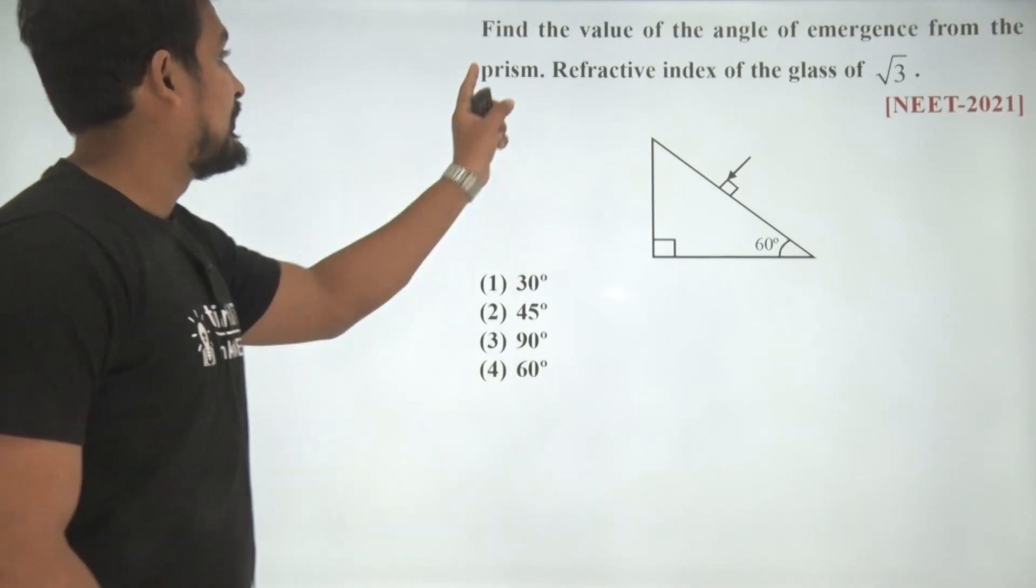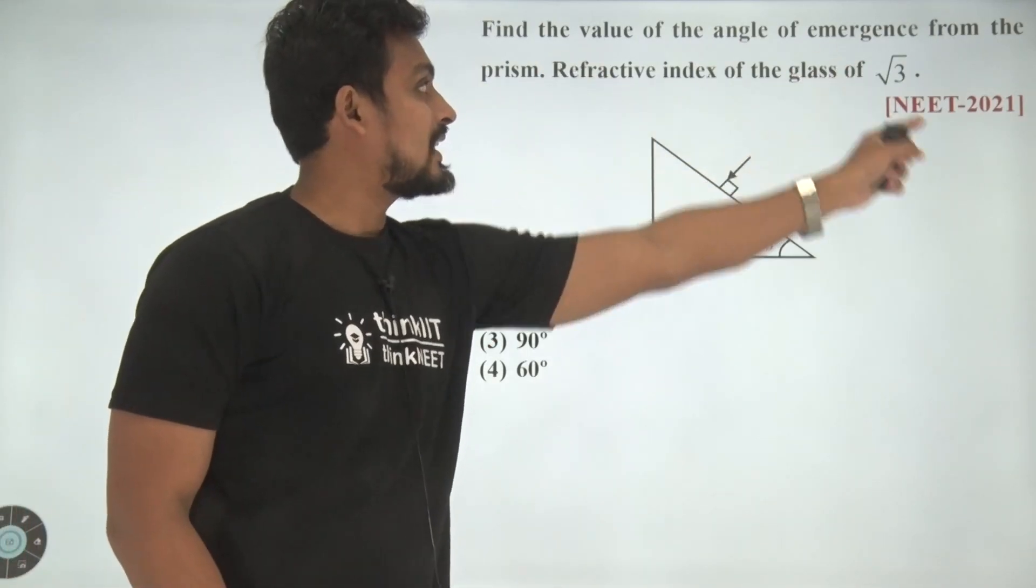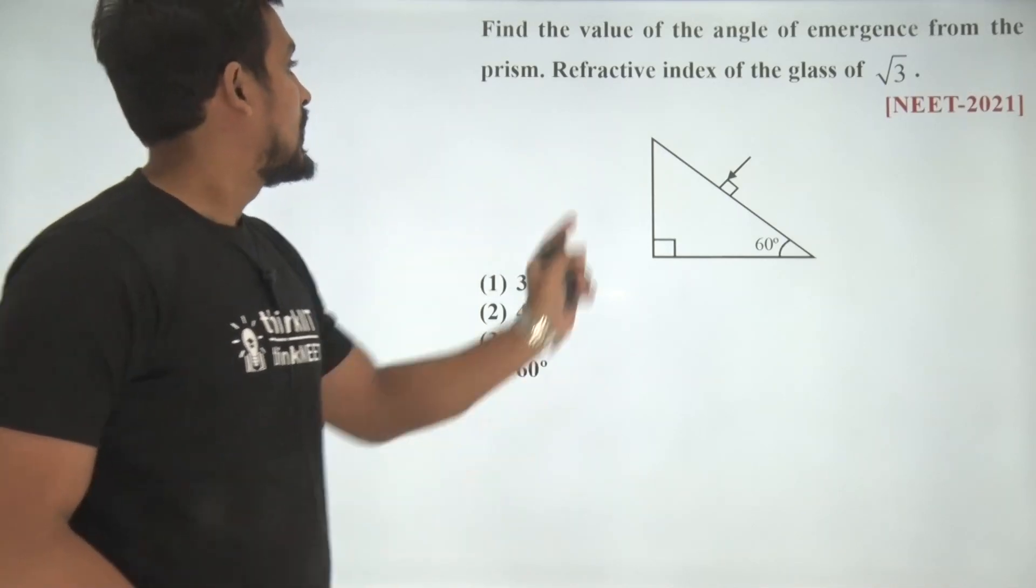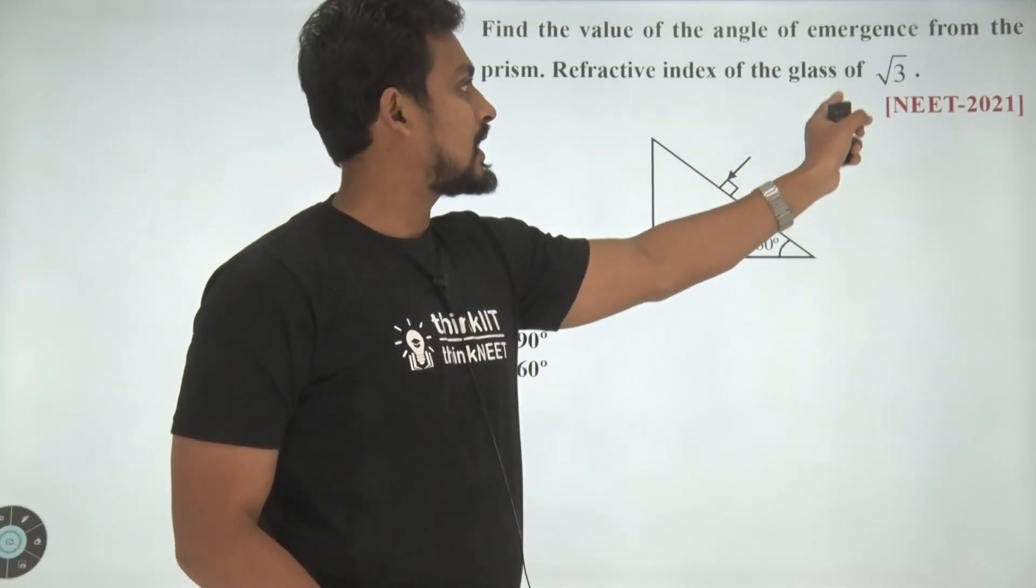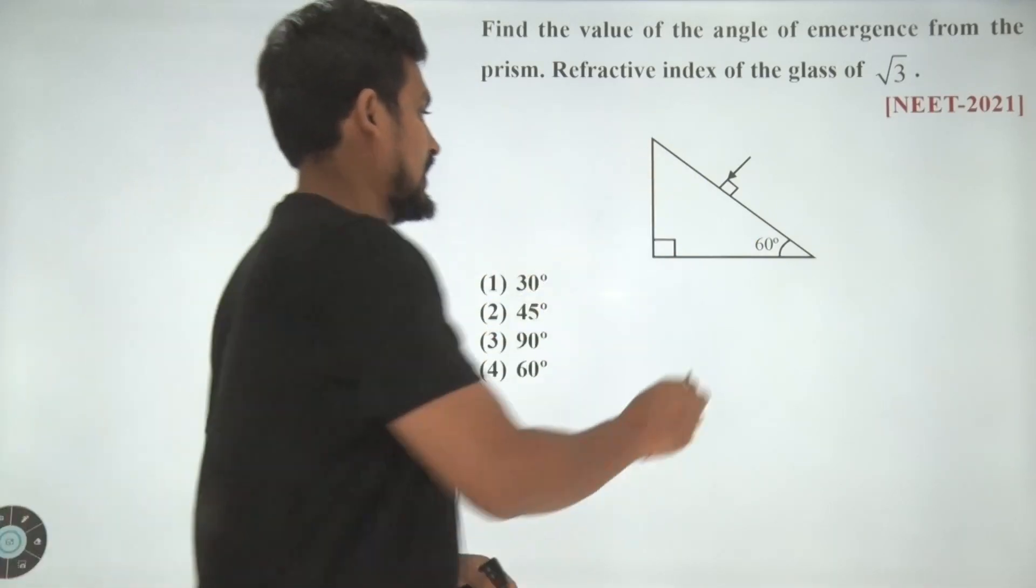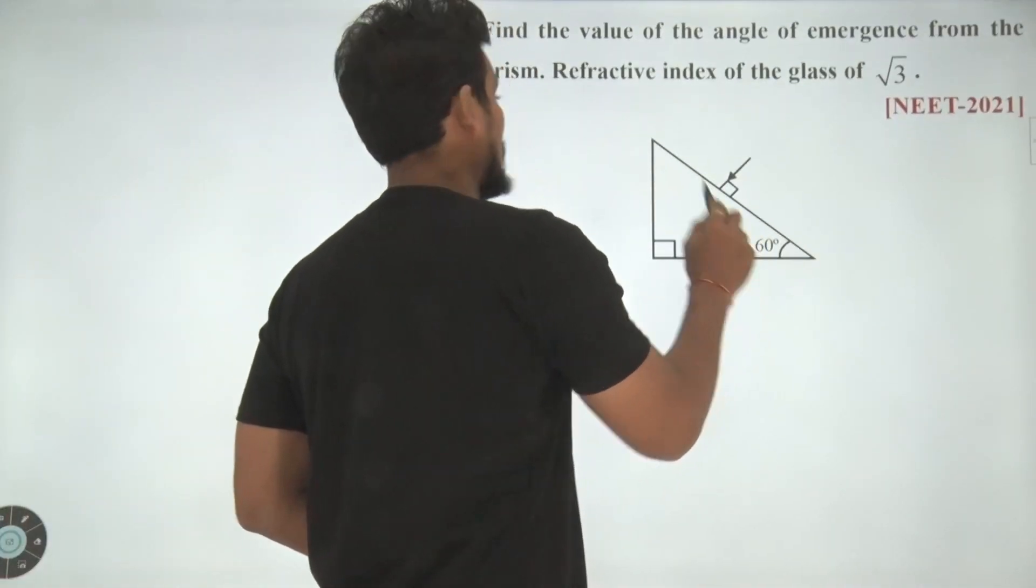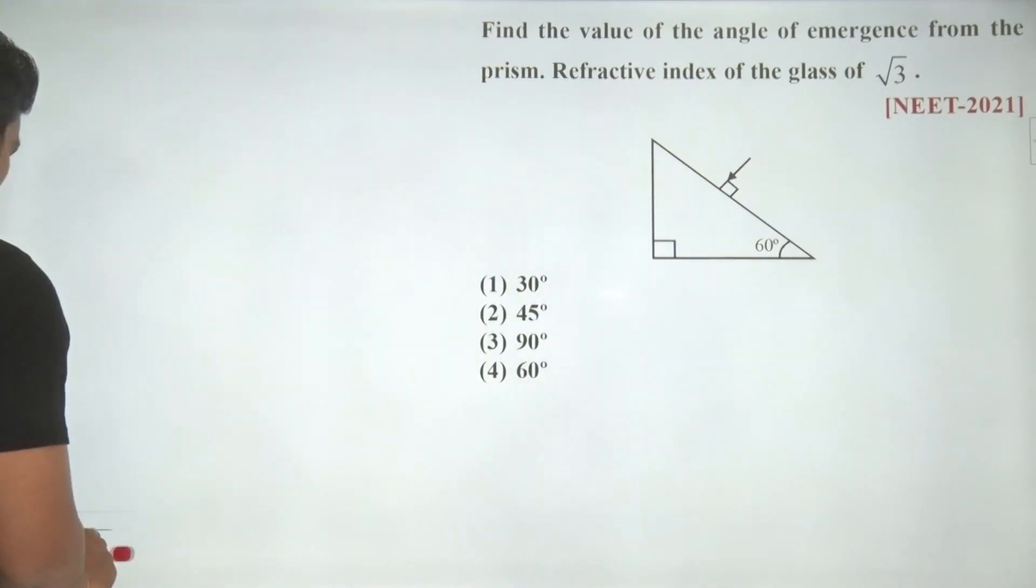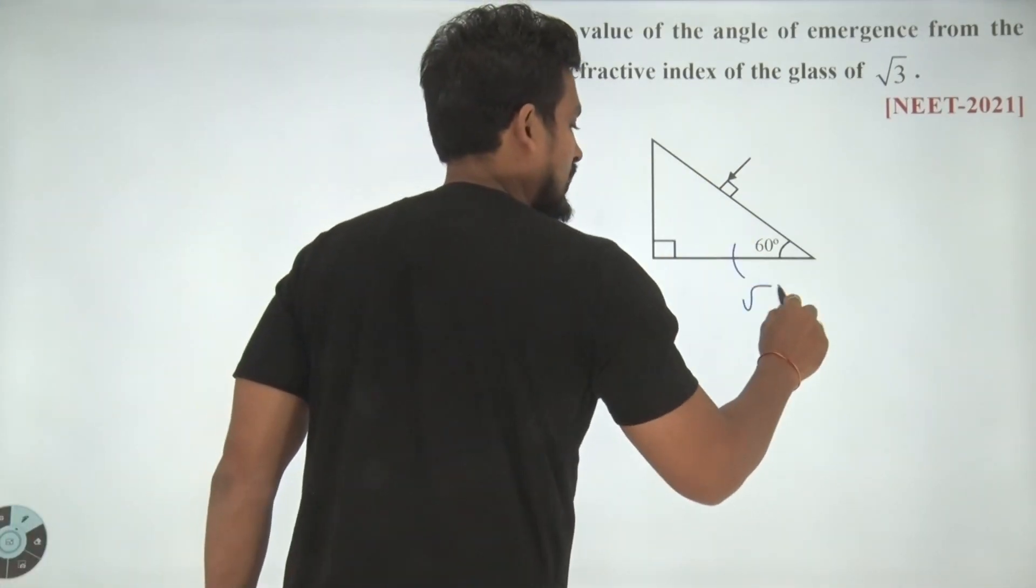The next question is: find the value of the angle of emergence from the prism. Refractive index of the glass is root 3. We are given with the value of refractive index of the glass which is given as root 3.